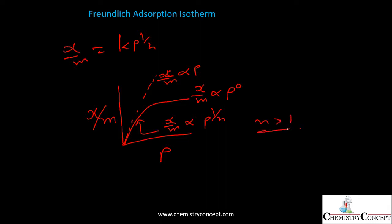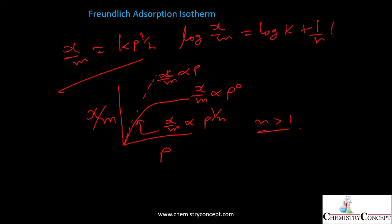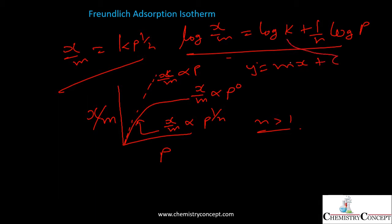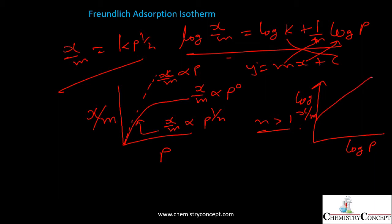Taking the log of both sides of the Freundlich equation gives: log(x/m) = log k + (1/n)·log p. Comparing this with y = mx + c, the slope is 1/n and the intercept is log k. Plotting log(x/m) versus log p gives a straight line with slope 1/n and intercept log k. This is the Freundlich adsorption isotherm.